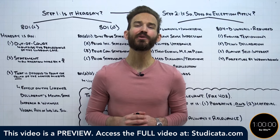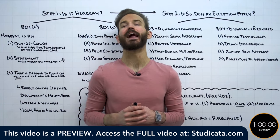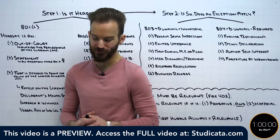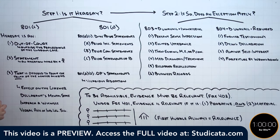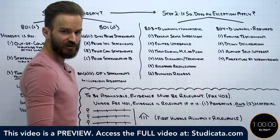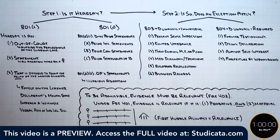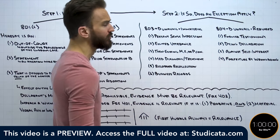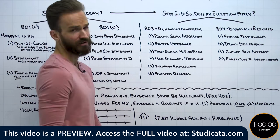In this lesson, we're going to go over the most frequently tested and highest yielding areas of evidence on the bar exam in 60 minutes or less. We're going to go over the absolute must-know stuff in evidence for the bar exam, which historically, if we look at the data, is going to be Article 4 of the Federal Rules of Evidence and Article 8 of the Federal Rules of Evidence.